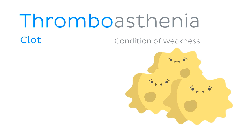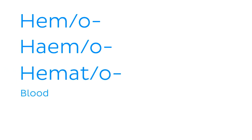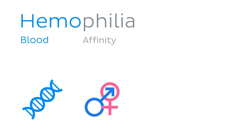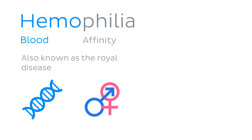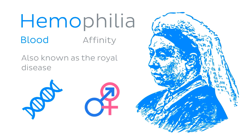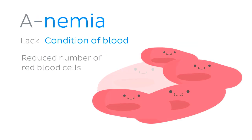Some other useful blood-related roots are heme or hemo, or haeme or haemo, and hemat or hemato. They all originate from the Greek hema and all mean blood. One example is hemophilia, a genetic, sex-dependent disorder which also affects blood clotting. It literally means to have an affinity for blood or bleeding. In the 19th and 20th centuries, it was known as the royal disease because Queen Victoria passed it to three generations of her descendants across Europe. As we saw with leukemia, the suffix emia refers to a condition of the blood. Another common example is anemia, a reduced number of red blood cells.